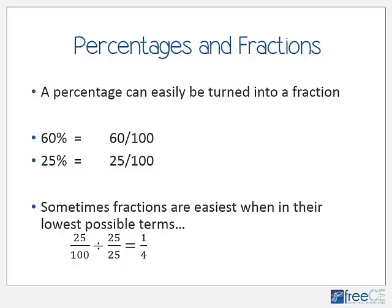When solving problems, we also need to convert between percentages and fractions. Remember, a percentage is a number of parts out of 100: 60% is 60 over 100, and 25% is 25 over 100. Sometimes it's easiest to work with fractions in their lowest possible terms — divide both numerator and denominator by the same number. For 25 over 100, both are divisible by 25, giving us one-fourth.